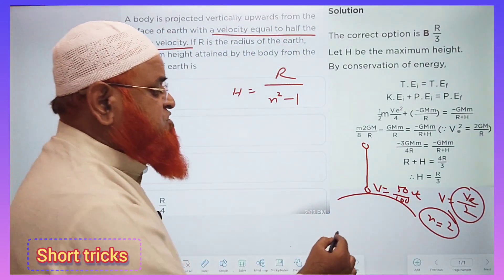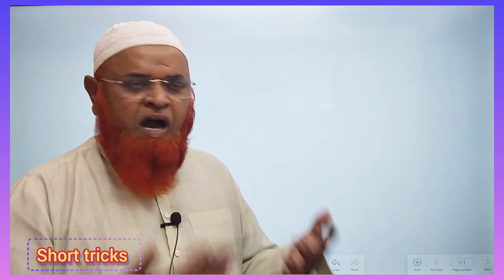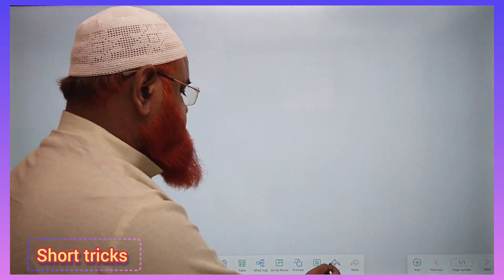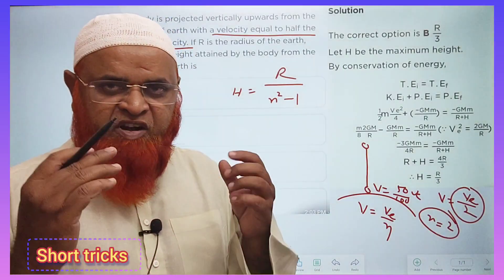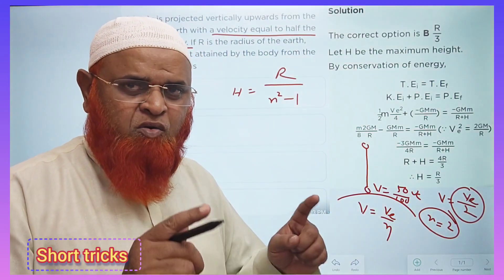That means in general, you have to consider V is equal to V by n. If it is half or one third, what it may be. So, V by n. n you have to consider.